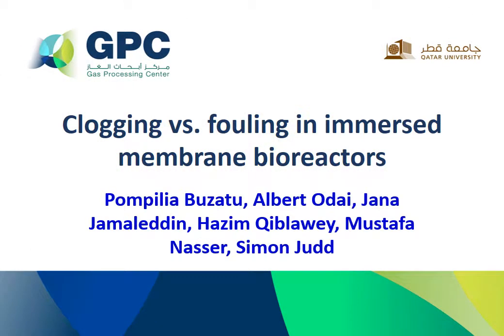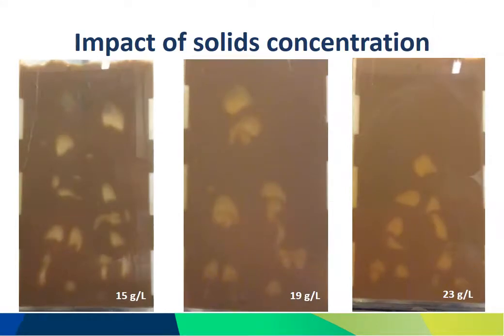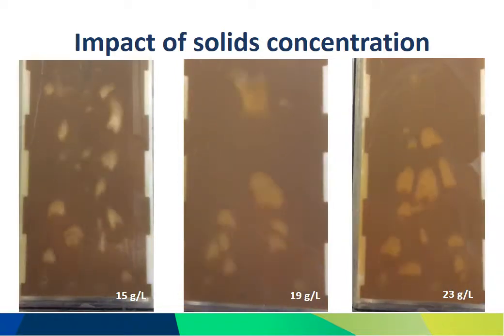Hi, this is Simon Judd. There's just one aspect of our work which is much more easily explained if you can actually see it, so I'm just going to run through it now. Here we have our membrane channel face on, so you can actually see what's happening inside. It's filled with sludge at three different concentrations, from 15 grams per litre on the left to 23 grams per litre on the right. I'm just going to run this video so you can see what happens to those air bubbles as they pass through that channel.